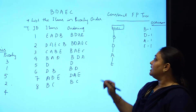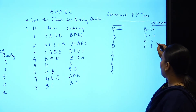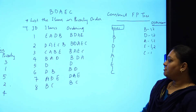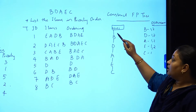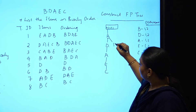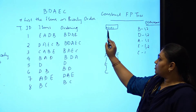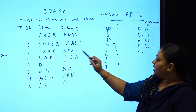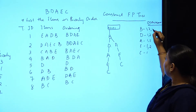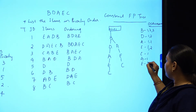For the second transaction (B, D, A, E, C), the path B→D→A→E already exists, so we increment each: B=2, D=2, A=2, E=2. Then C is new, so we append C under E, giving C=1. For the third transaction (B, A, E, C), B exists but B's child is D, not A. So we create a new branch: B→A→E→C. B becomes 3, and A, E, C on this branch each start at 1.